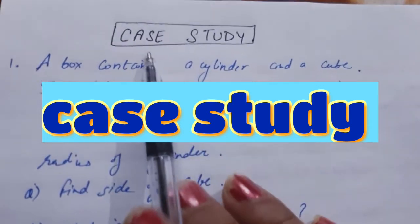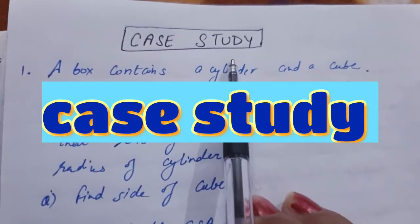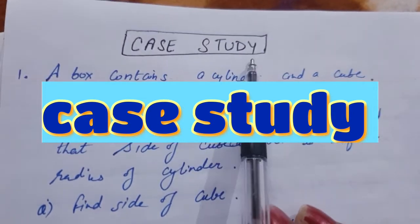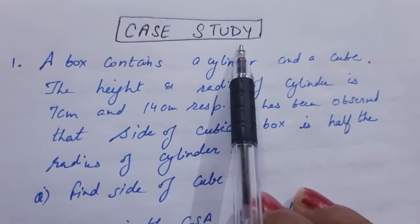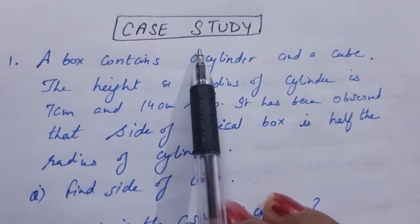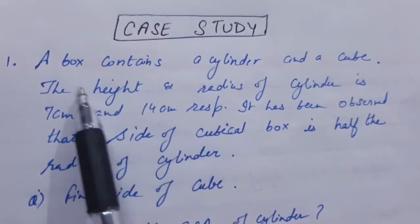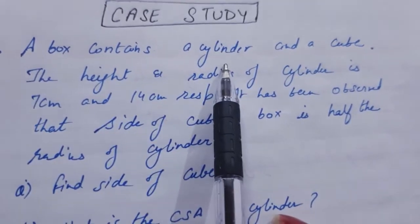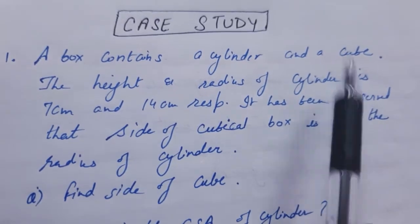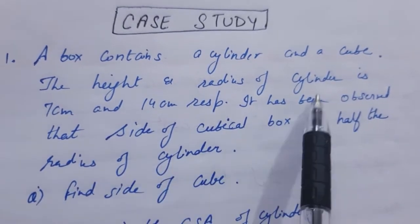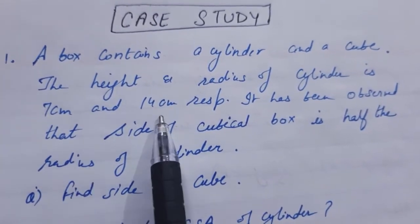Case study questions are introduced in 7th and 8th grade onwards, so we will discuss a case study question here. A box contains a cylinder and a cube. The height and radius of the cylinder is 7 centimeters and 14 centimeters.